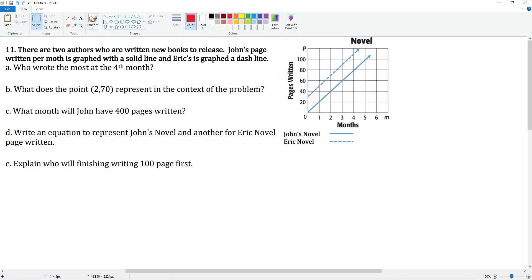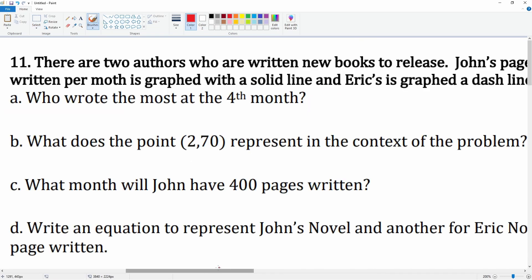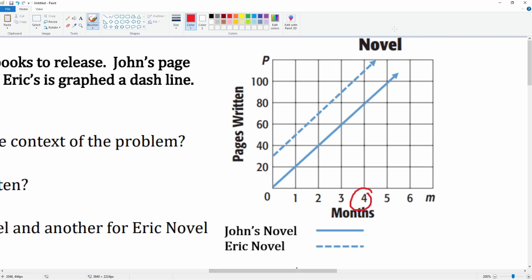This is the fourth month right here. Okay, if we draw a line up to it, we'll see who wrote more. So here at the fourth month, it looks like Eric did 80 pages. But here we keep going up—this looks like that is 110 pages for the dashed line. Nope, so this is not Eric.